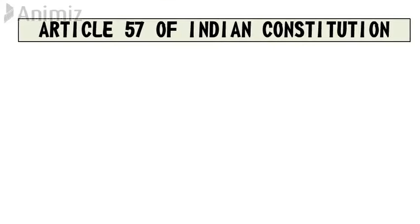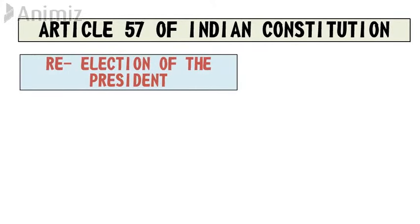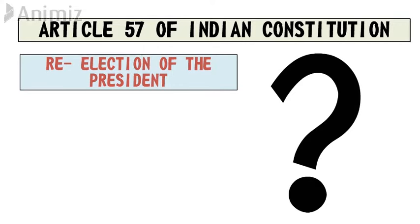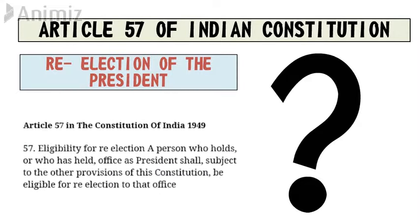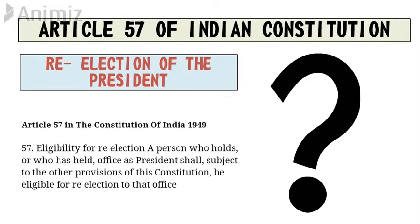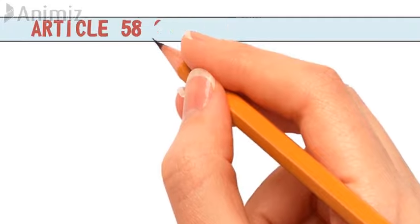Article 57 of the Indian Constitution talks about the re-election of the President. Re-election means whether a person who has once been elected as President can be elected again. According to Article 57, yes — any President can be re-elected as President any number of times. There is no number barrier; there is no restriction on a person being elected for a second or third time.